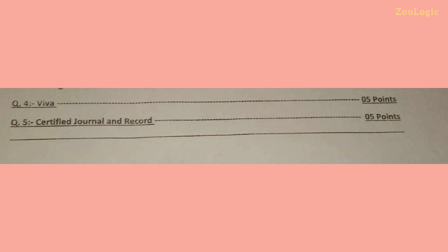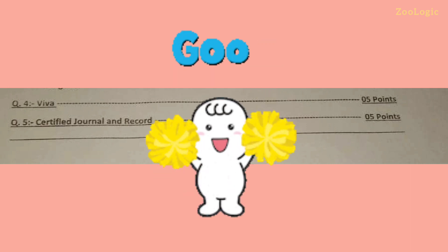Question number four is the viva, taken by your external examiner or, if absent, your internal examiner. Basic questions are from the dissection. Finally, question number five is the certified journal. The viva and certified journal together comprise fifty-five points — both together make one mark.